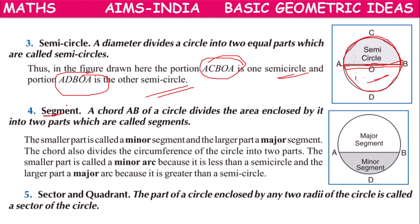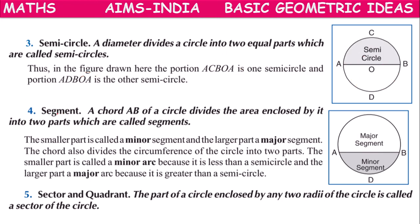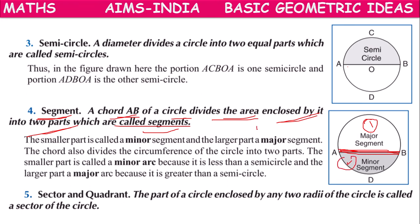Next we have a definition called segment. A chord AB of a circle divides the area enclosed by it into two parts which are called segments. A diameter divides the circle into two equal parts called semicircles, but a chord divides the circle into two unequal parts — these are called segments.